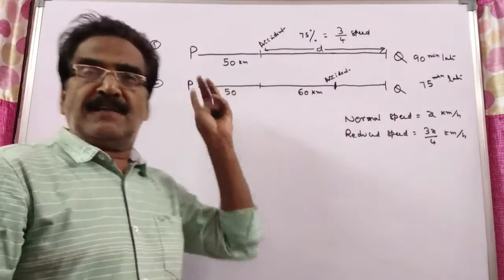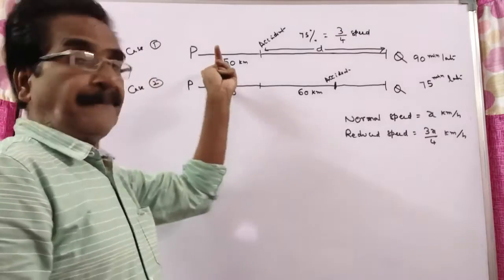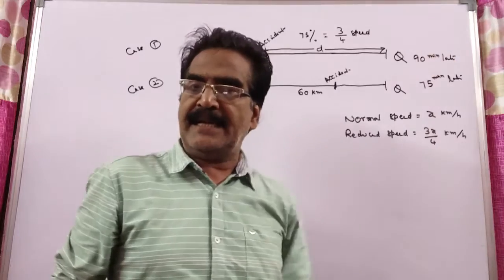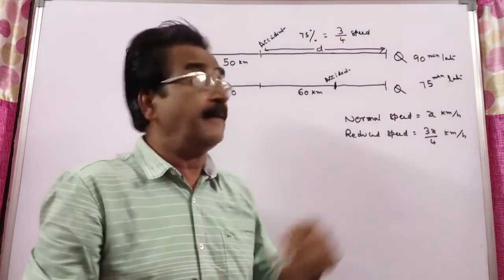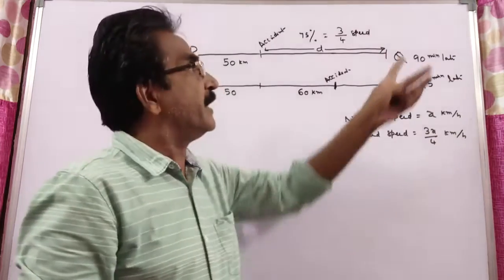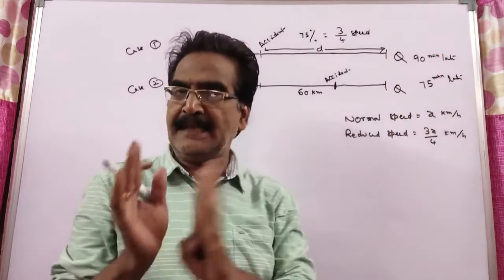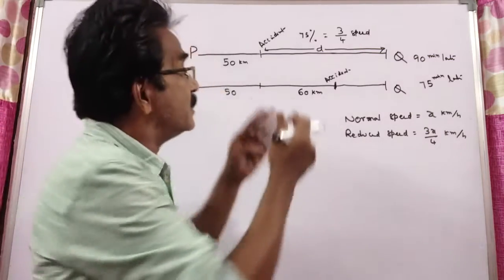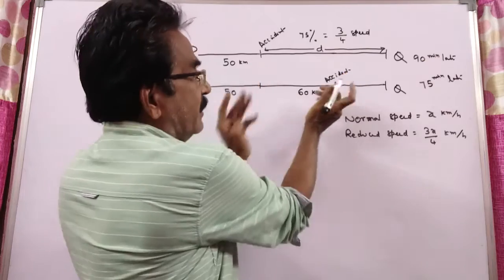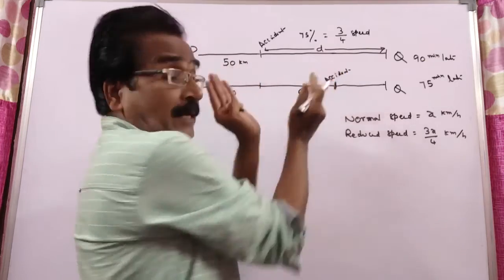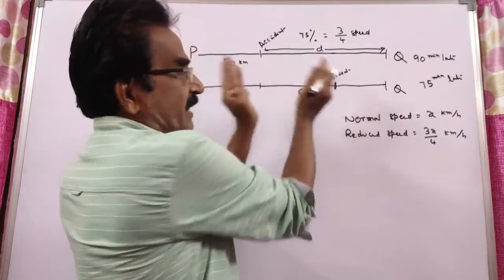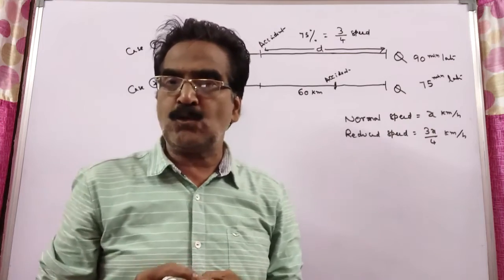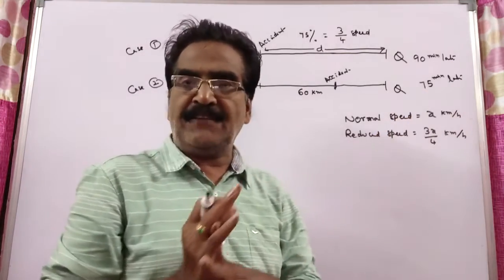After travelling 50 kilometers from a point P, a train meets with an accident and thereafter it travelled at 75% of its usual speed, that is 3/4 of its normal speed, and reached point Q 90 minutes late. In the second case, had the accident occurred 60 kilometers further, it is late by only 75 minutes. So 15 minutes sooner means it is late by only 75 minutes.